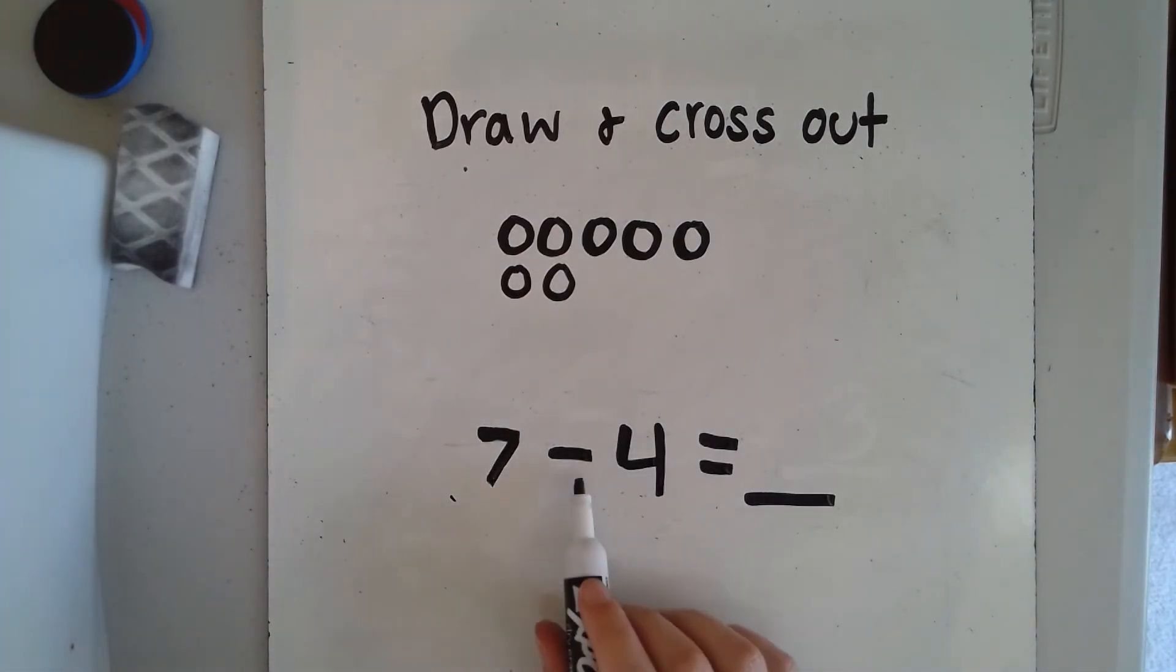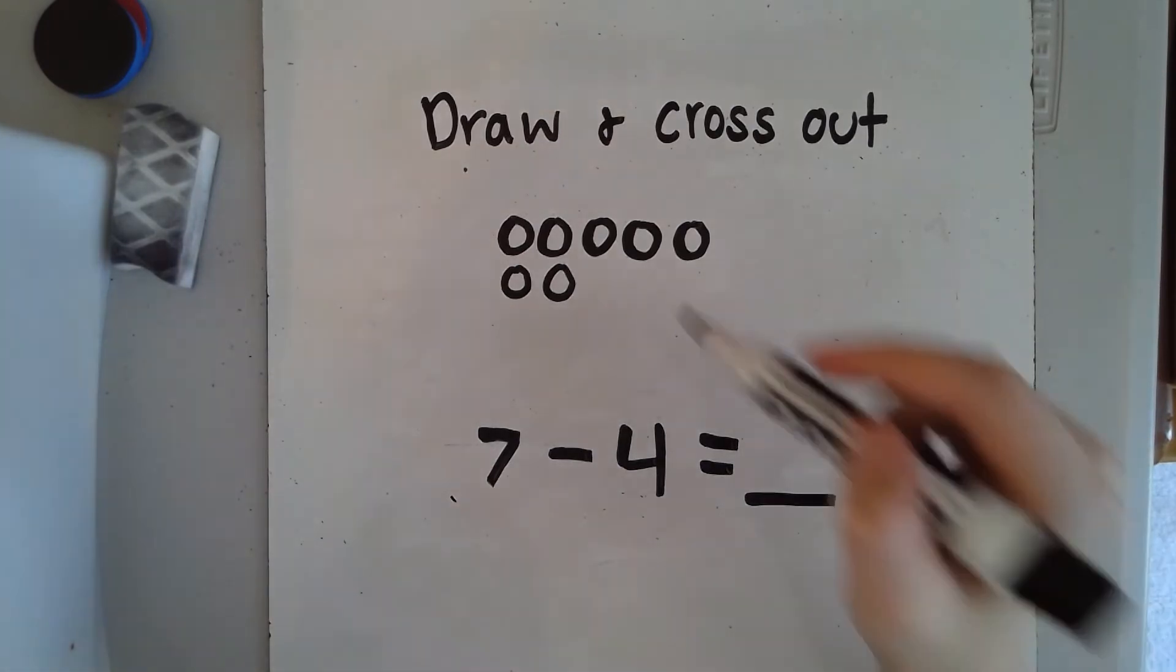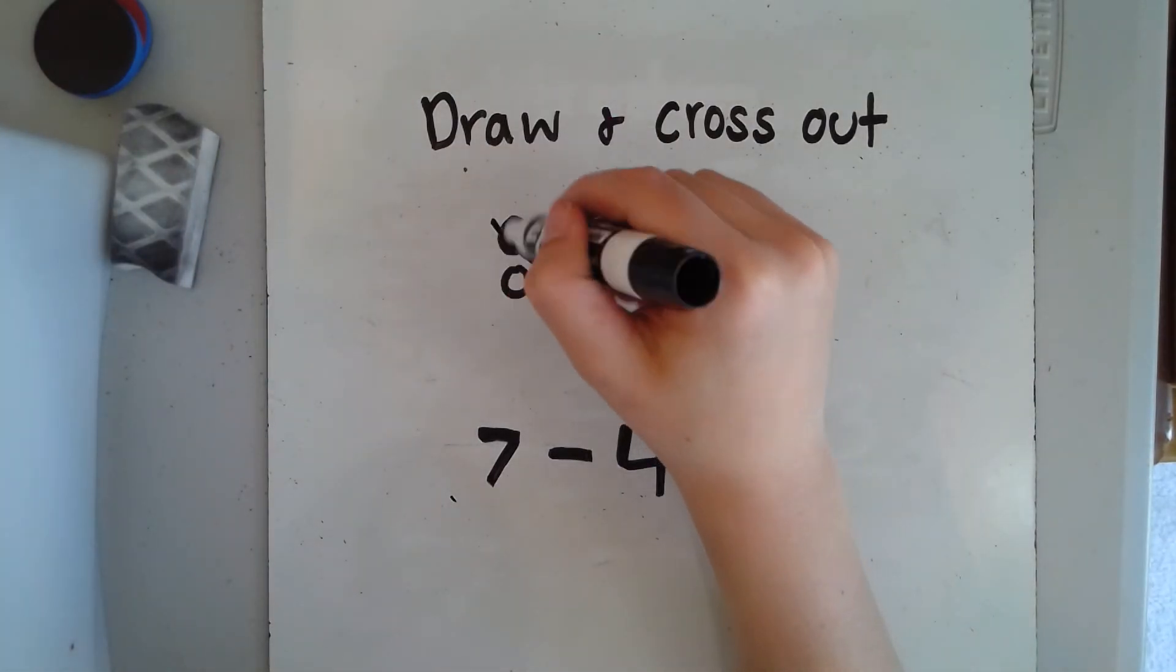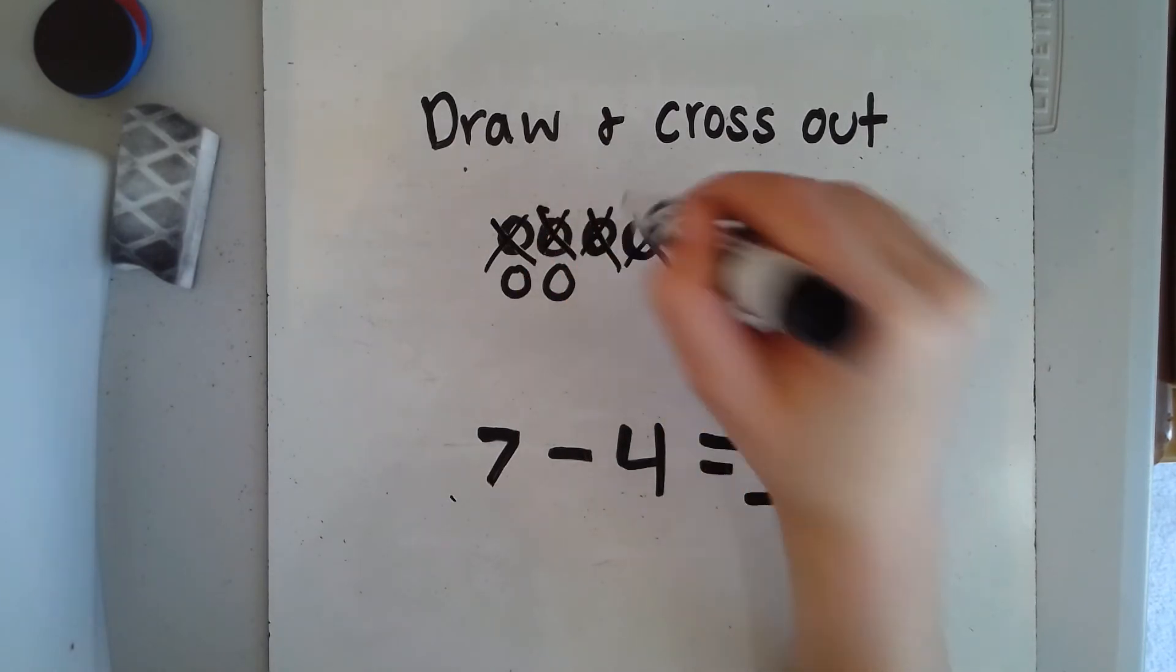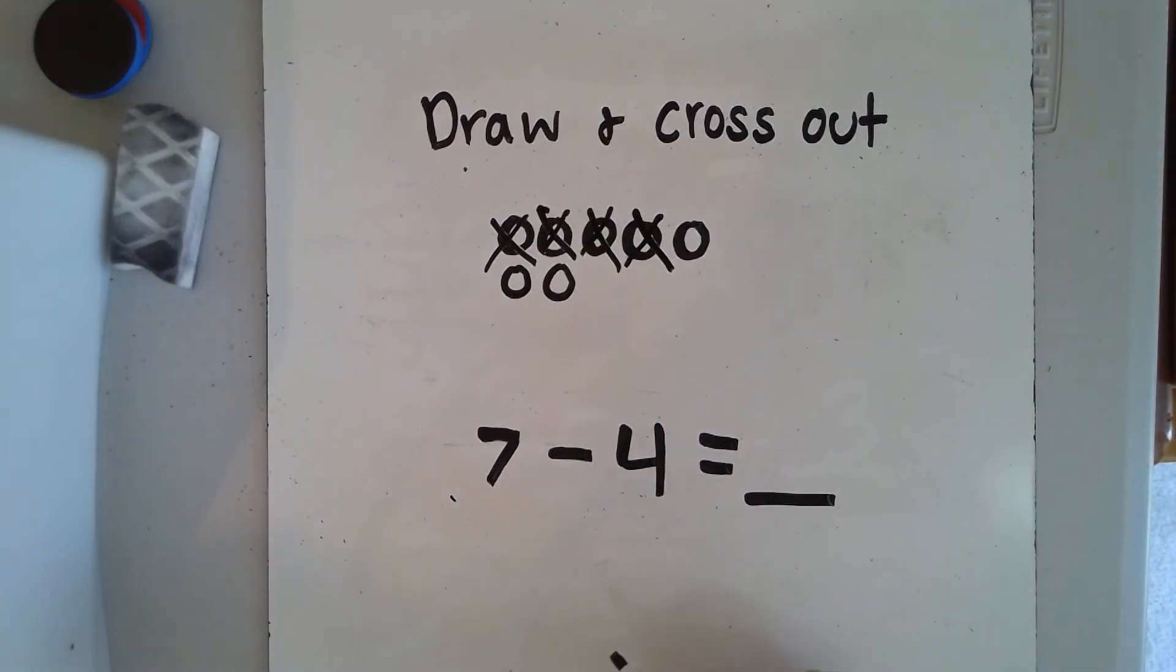Now that minus means take away, so how many circles will I be taking away or crossing out? Four, good. Let's cross out four circles, ready? One, two, three, four. I took away four circles.